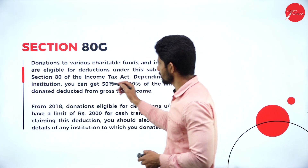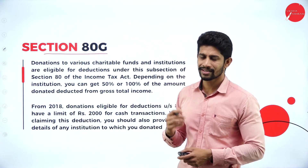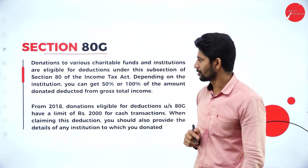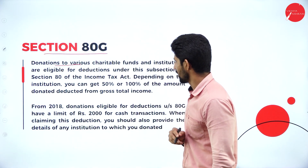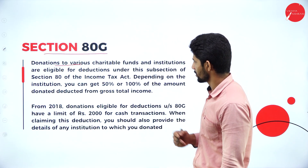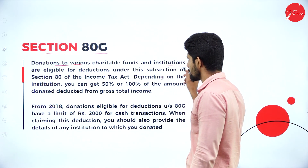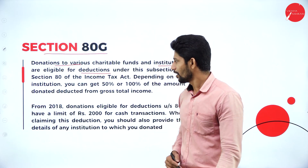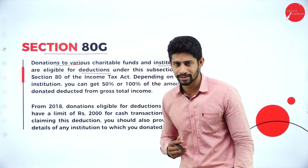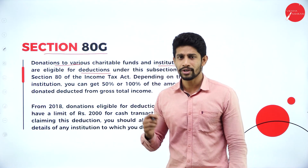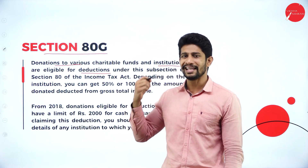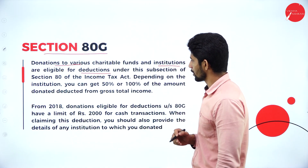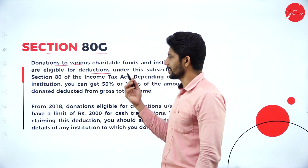Now we have Section 80G. What is Section 80G and what deductions are available under it? Donations to various charitable trusts, charitable funds, and institutions are eligible for deductions under Section 80G of the Income Tax Act. Under this section, we give deductions for donations made by any individual or by any HUF to a particular association or charitable trust.